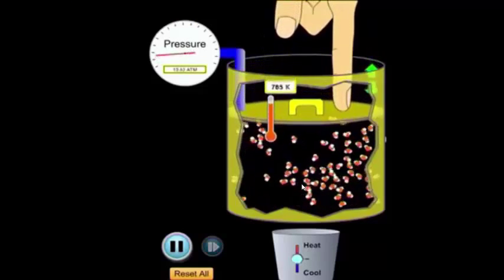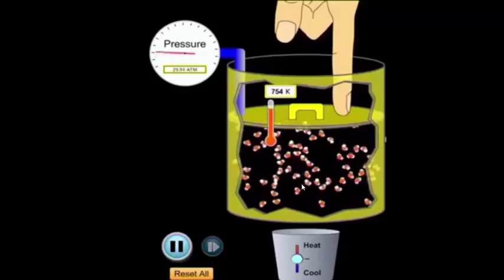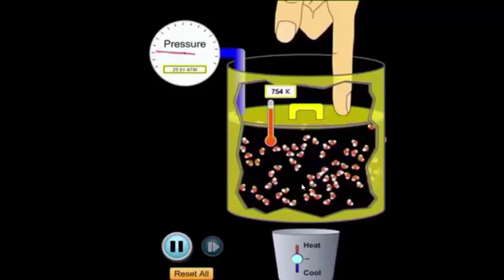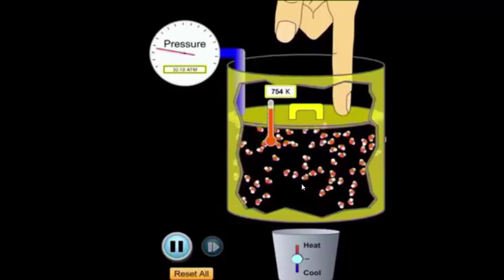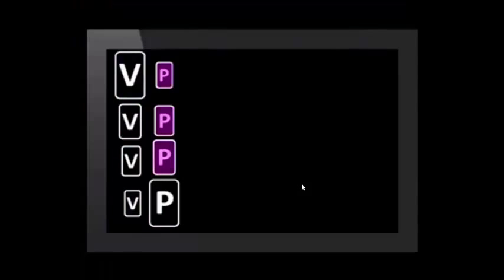We push the lid down. Notice how the gas molecules collide with the sides of the container more as they are squashed in a smaller space. What does that tell us about the relationship between volume and pressure? As volume is decreased, pressure increases.